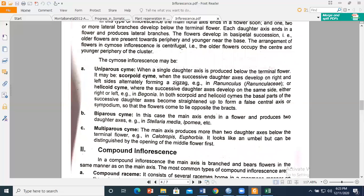In biparous cyme, branches develop on two sides of the main axis. And in multiparous cyme, branches are more than two.